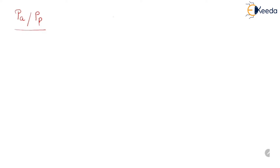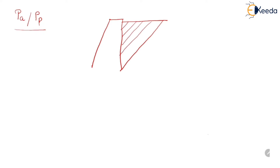Suppose this is the retaining wall and this is the backfill. By this theory, first a trial failure surface is assumed, and because of this failure surface a failure wedge is formed. Coulomb assumed that this failure wedge is in equilibrium, and because of that, if we draw a force polygon for different forces acting on this wedge, then the triangle will be a closed triangle.